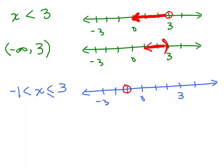X is sandwiched between negative 1 and 3. It doesn't exactly equal negative 1, so I put a circle on negative 1, but it goes all the way up to and including positive 3, so we fill in between those numbers. Now, how am I going to write that in interval notation? Since it's sandwiched between two numbers, you write those two numbers in order — smallest on the left — and if it does not have an equal sign, use a parenthesis; if it does have an equal sign, use a bracket. So that's how you write negative 1 less than x less than or equal to 3 using interval notation.